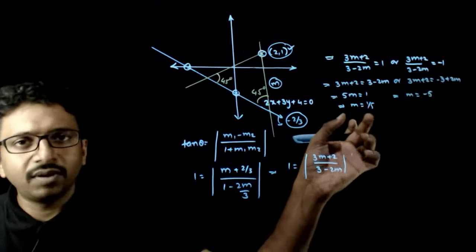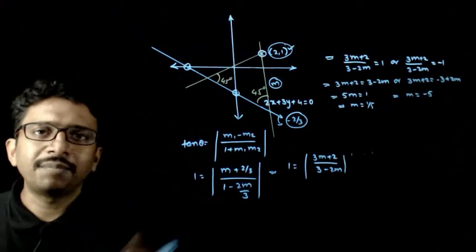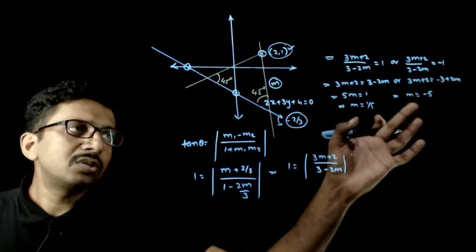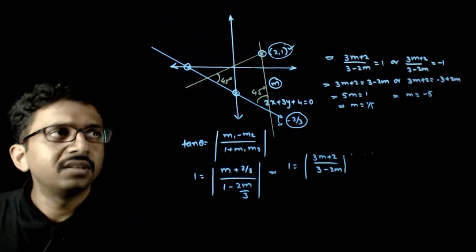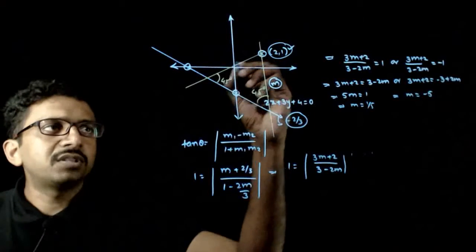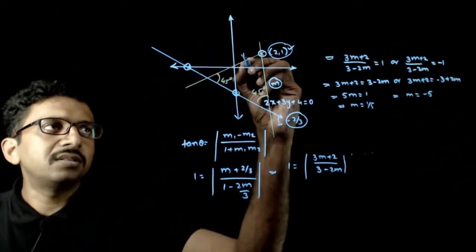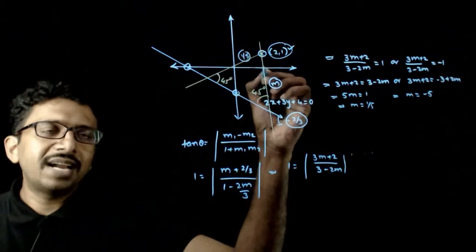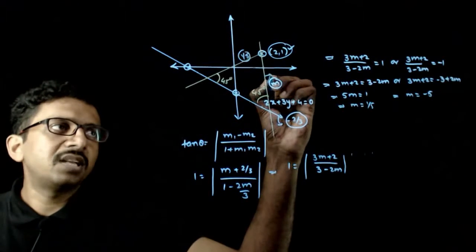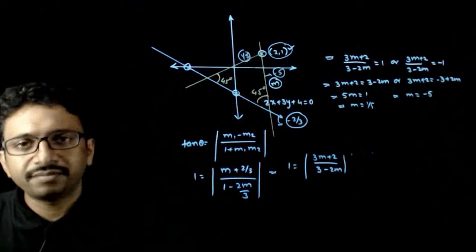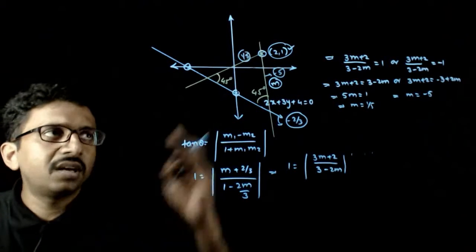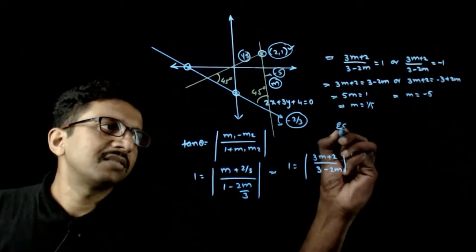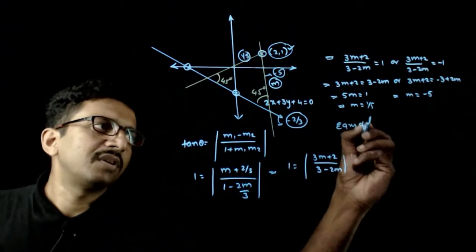So m can be equal to 1 by 5 or m can be equal to minus 5. These are the two slopes which are possible. From the diagram, one of the slopes makes an acute angle — the slope of that line is 1 by 5 — and the other looks like it is making a slightly obtuse angle, with slope minus 5. Now you know the point and you know the slope, so we find the equations of the lines.